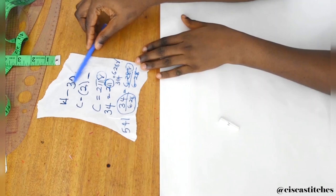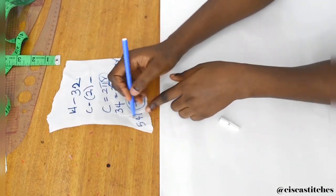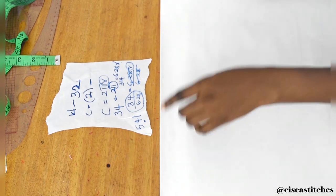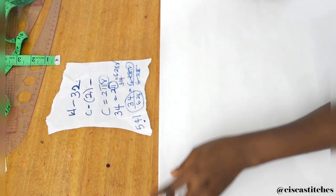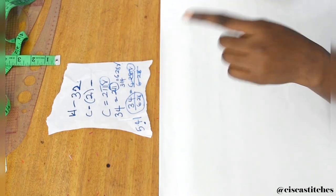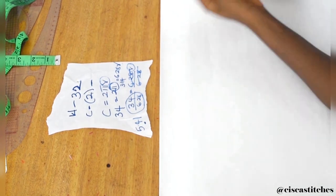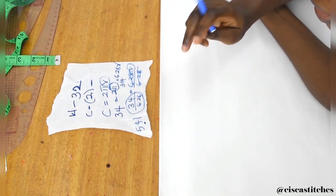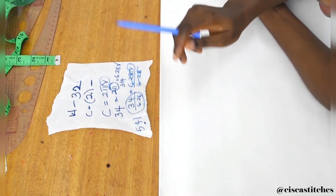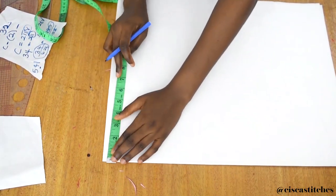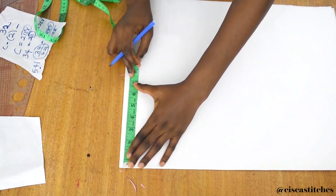When you are folding your fabric, you are going to fold your fabric such that you have 5.41 plus the length of your peplum plus seam allowance. So you're going to fold your fabric to 5.41 plus the length of your peplum or flare.